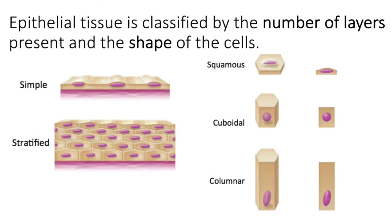Epithelial tissue is classified in two ways. First, it's classified by the number of layers present. If there's only one layer, it's called simple. If there are two or more epithelial cell layers, it's called stratified. In one example we can see about five layers of cells — that's definitely stratified — but even two layers would be considered stratified.